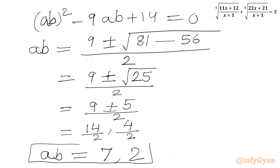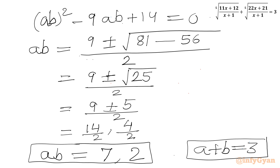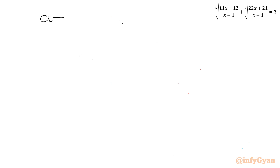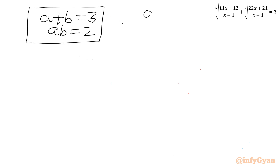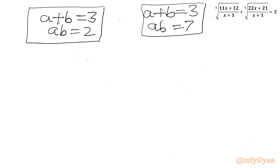Now we know our first equation a plus b equals 3. We can write two systems. The first system: a plus b equals 3 with ab equals 2. The second system: a plus b equals 3 with ab equals 7. We can think of a quadratic equation whose roots are a and b, where the sum of roots is 3 and the product of roots is 2 or 7 for their respective systems.